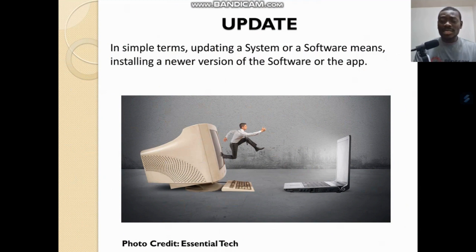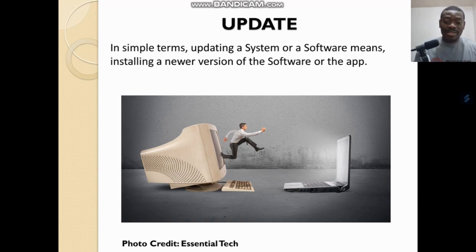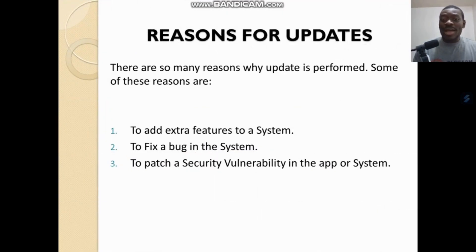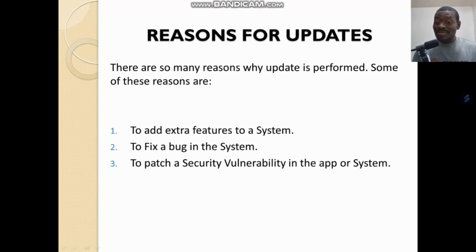When we say you are updating a system, it basically means you're moving from an older version of that system to a newer version. That's what an update is — moving from an older version of a software or application to a newer version. Now, what are some of the reasons why updates come up? One is to add extra features to a system. Two is to fix a bug — basically an error in the system. Three, which is really important, is to patch a security vulnerability in the app or system.